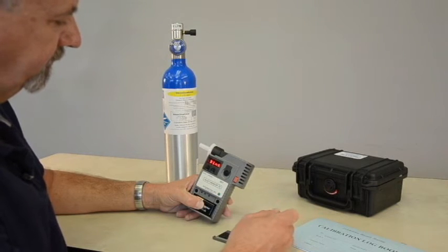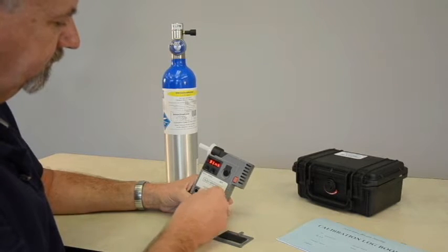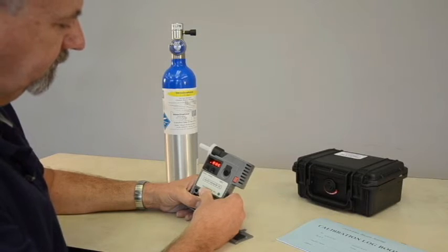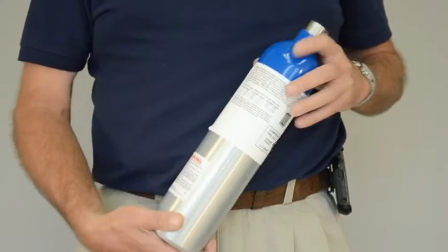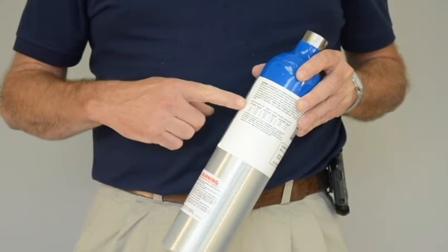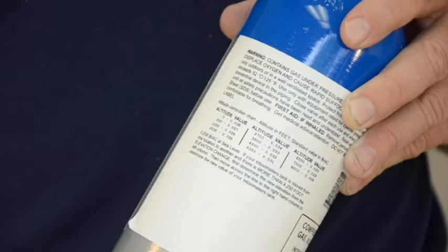Before performing a calibration, you must first locate the expected value of your gas standard. The expected or target value of your gas standard can be derived by referencing the altitude chart on the back of your tank. For example,